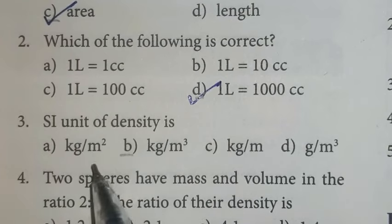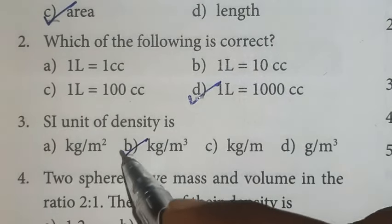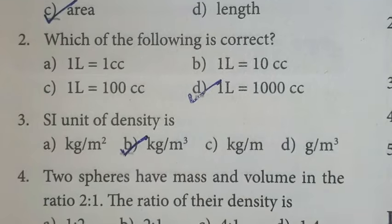Third one, SI unit of density is kilogram per meter cube. Option B is the right answer.